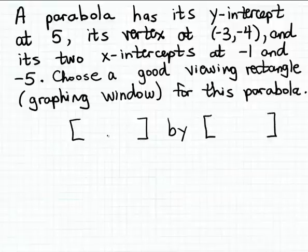Let's think about what portion of the x-axis we would like to draw and what portion of the y-axis we would like to draw when we make a graph of this particular parabola. Let's start with the x-window first. We're told that we have x-intercepts at -1 and -5, so we want to include those key features of the parabola in our graph.